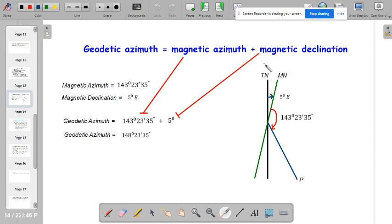So let's say, for example, you have a true north here. This line is a true north. And you have a magnetic meridian going to the right or the east, which is 5 degrees east. And a line is drawn. This is an azimuth, a magnetic azimuth, which has a measure of 143 degrees 23 minutes 35 seconds from the magnetic north. Now, if you are going to solve for the geodetic azimuth, get the magnetic azimuth plus the magnetic declination. Now, why plus?